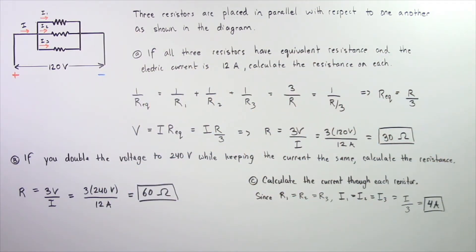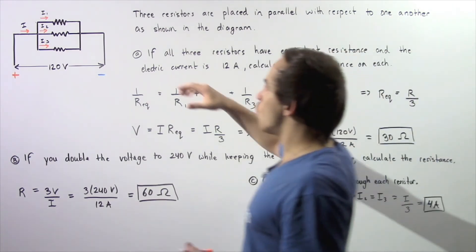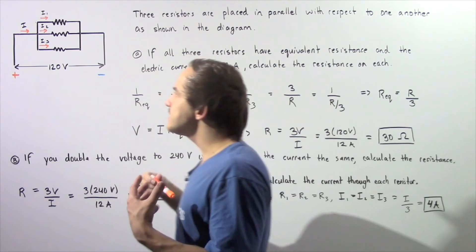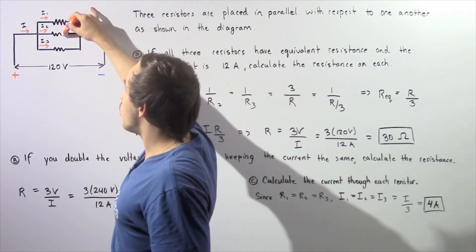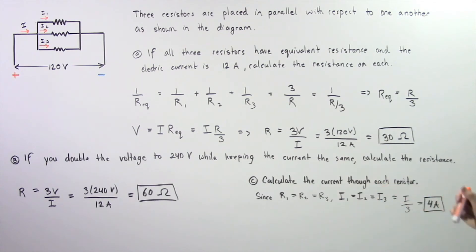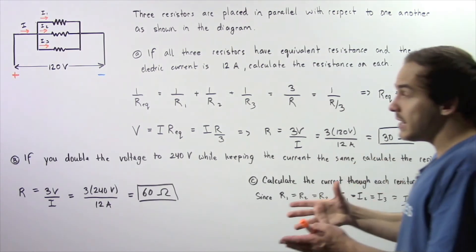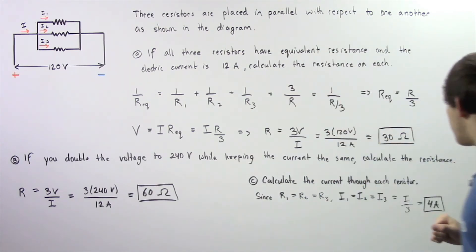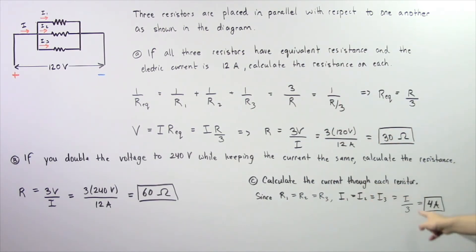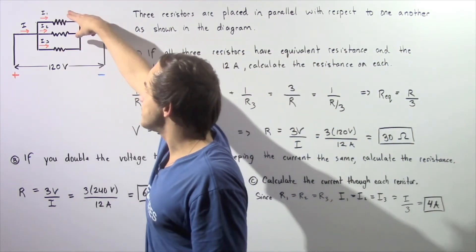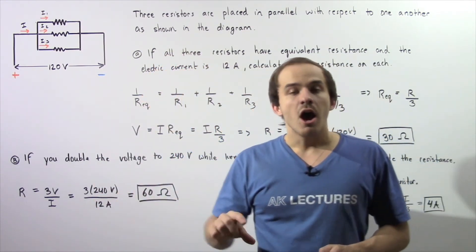Now let's move on to part C: calculate the electric current that passes through each one of these resistors. When the electric current enters the intersection, it splits into three sections. Because each one of these resistors has the same exact quantity of resistance, that implies that I1 is equal to I2 is equal to I3. So the electric current splits evenly between these three sections, meaning each branch current is equal to I divided by 3. So 12 amps divided by 3 gives us 4 amps. The electric current through each one of these resistors is 4 amps — exactly a third of the total electric current.